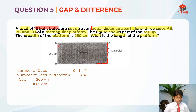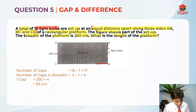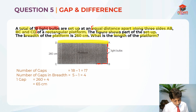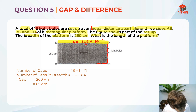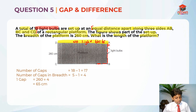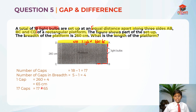Now let's find the total length of the three sides AB, BC, and CD together. Note that the fourth side AD has no light bulbs on it, so we only work with the three sides. Across these three sides there are 17 gaps, so we calculate 17 times 65 cm, which gives us 1,105 cm.